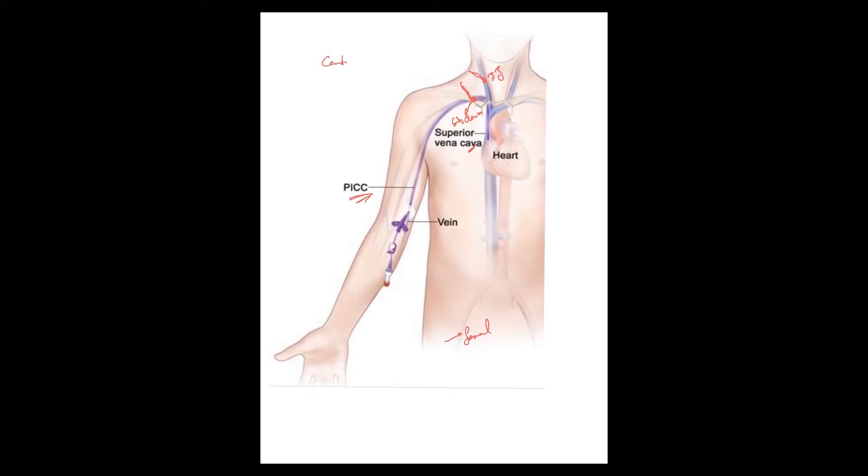Compared to peripherally inserted central lines, this can be internal jugular central line, subclavian central line on the right or left, and femoral central line on the left and right. Again, this is not femoral, but assuming this is femoral vein.